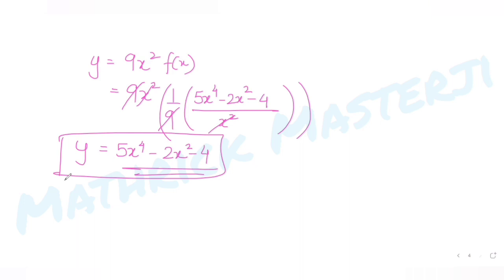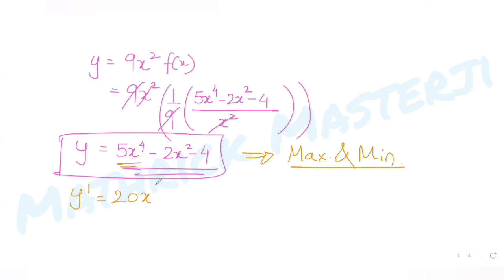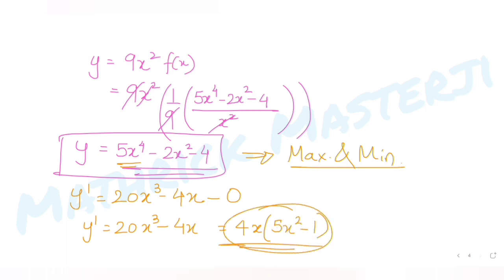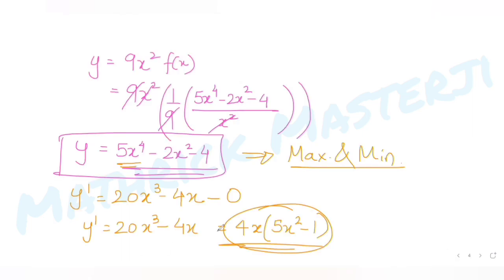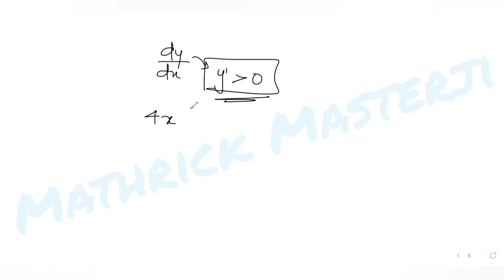We need to find where y is strictly increasing. Using the application of derivatives, I'll find the first derivative y' = dy/dx. The derivative of 5x⁴ is 20x³, the derivative of −2x² is −4x, and the constant −4 gives 0. So y' = 20x³ − 4x = 4x(5x² − 1).